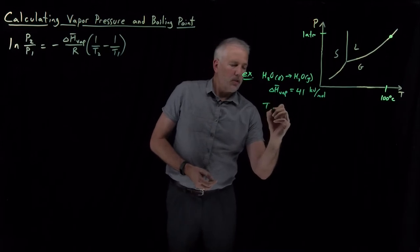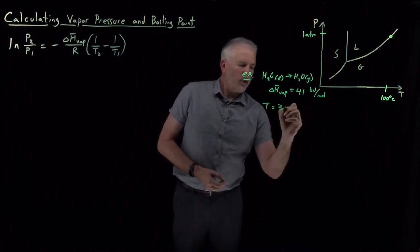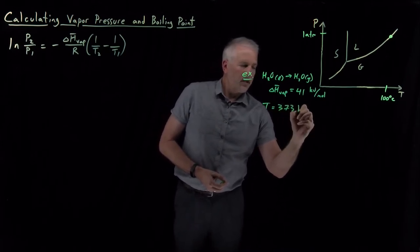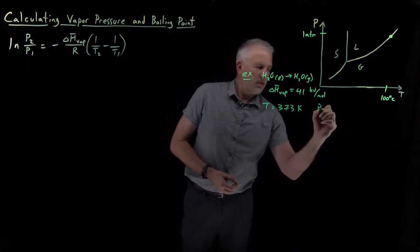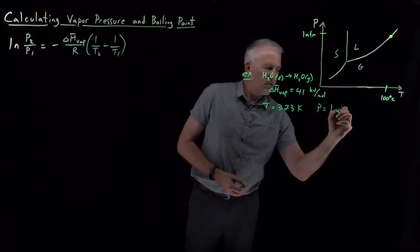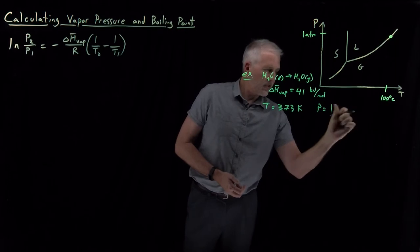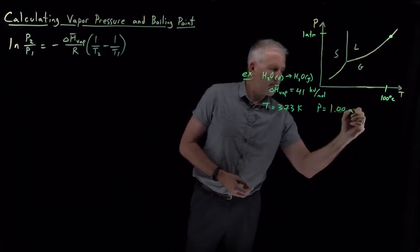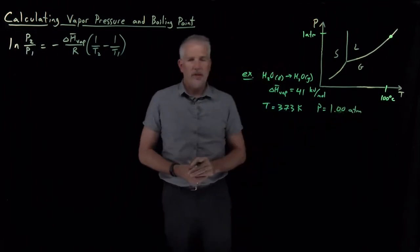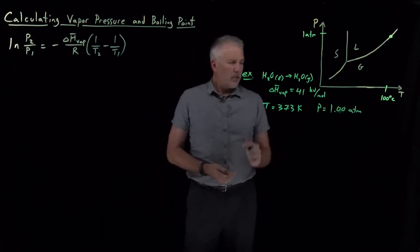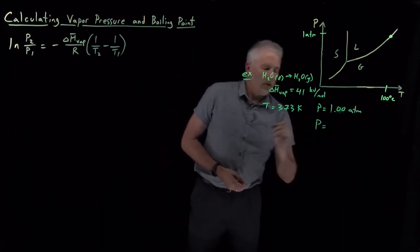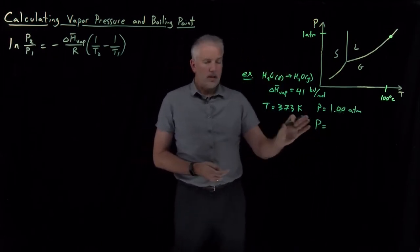And we know normally when the pressure is one atmosphere, let's give a couple of sig figs here, so when the pressure is 1.00 atmospheres, the boiling point is 373 Kelvin. Let's suppose we go to somewhere where the pressure is lower, like the top of a mountain.